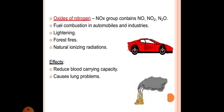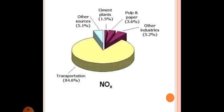Oxides of nitrogen: NOx group contains NO, NO2 and N2O. Fuel combustion in automobiles and industries, lightning, forest fires, natural ionizing radiations. Effects: Reduce blood carrying capacity, causes lung problems. Other sources 5.1%, Cement plants 1.5%, Pulp and paper 3.6%, Other industries 5.2%, Transportation 84.6%. NOx as shown in the figure.